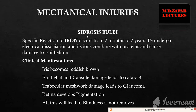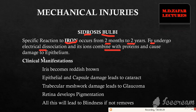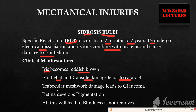The first specific reaction to the eye is siderosis bulbi, caused by iron, occurring two months to two years after its presence in the eye. Iron undergoes electrical dissociation and the ions produced combine with proteins, causing damage to the epithelium. The iris becomes reddish brown — easy to remember as iron when rusted has the same color. Epithelial and capsular damage leads to cataract, trabecular meshwork damage leads to glaucoma, and the retina develops pigmentation secondary to deposition of iron ions along with proteins. If not treated properly this can lead to blindness.